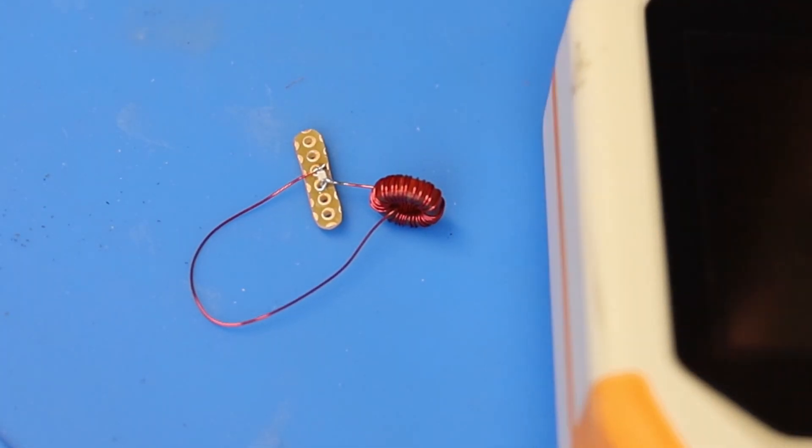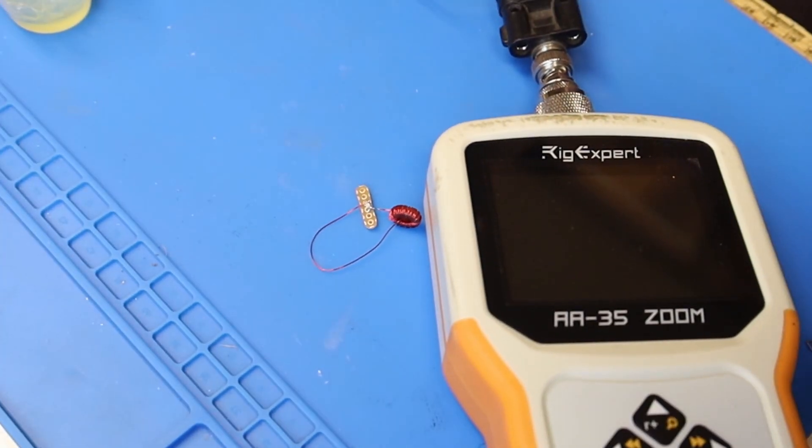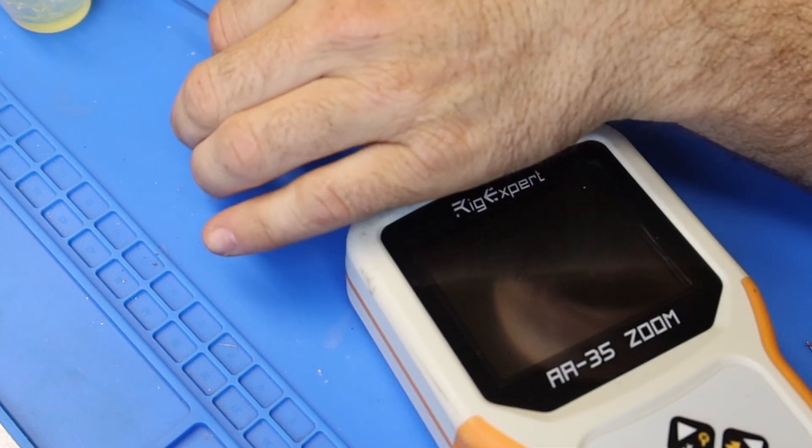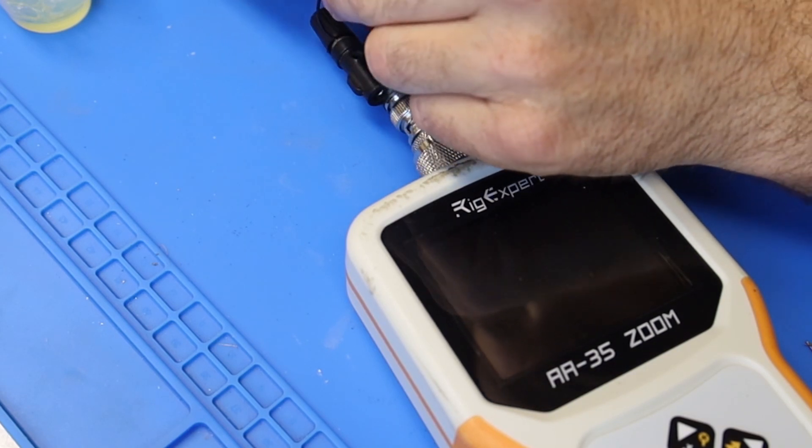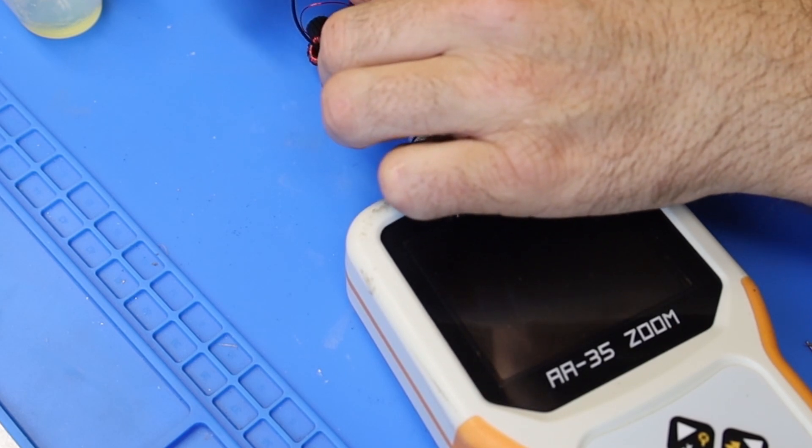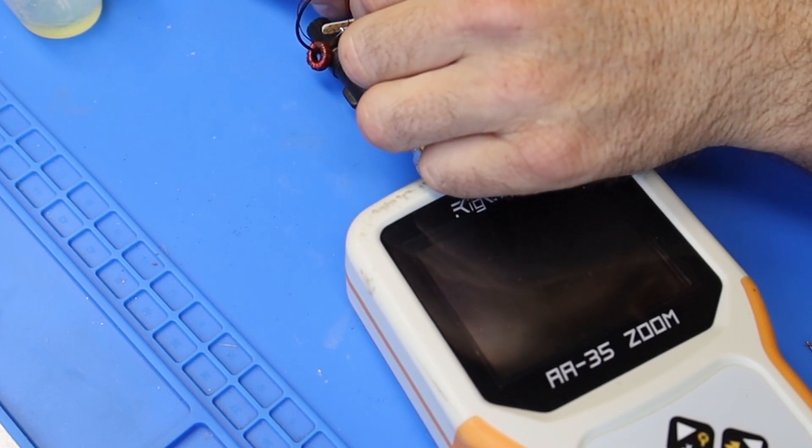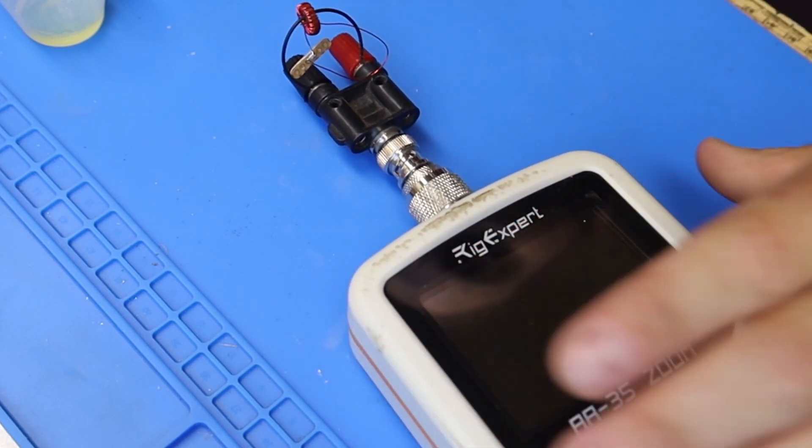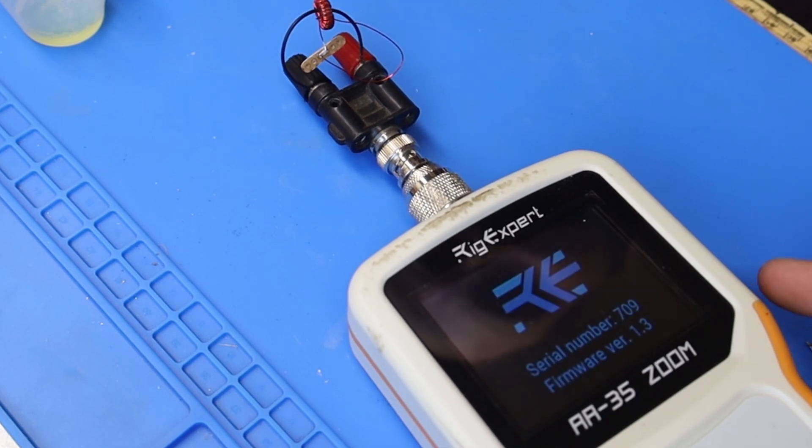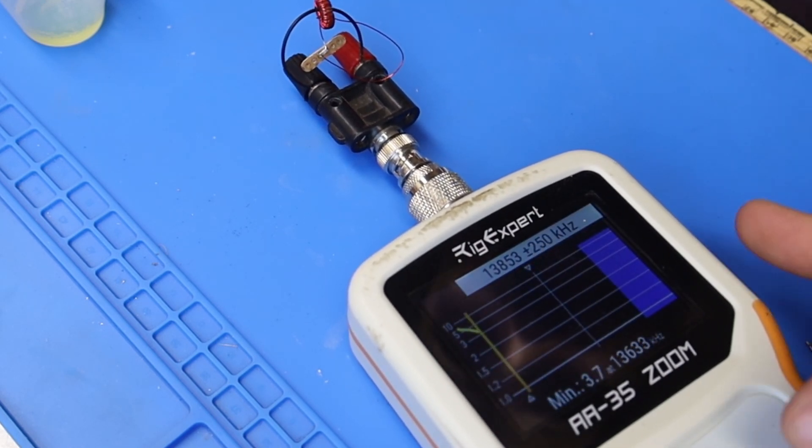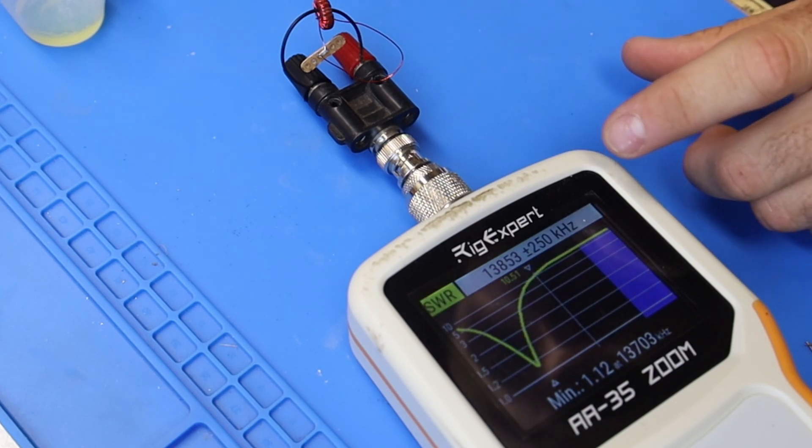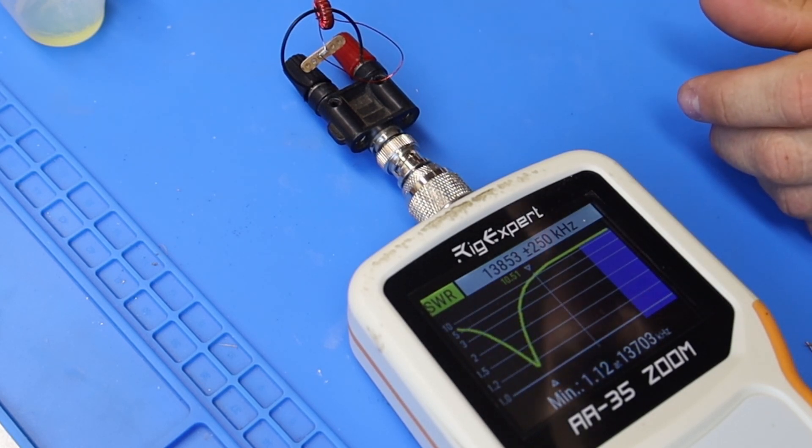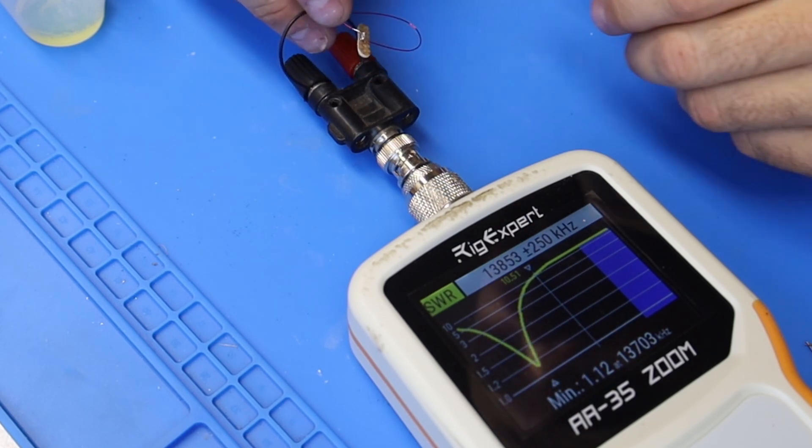So for tuning, we're going to use a Rig Expert AA35 zoom, BNC to binding post connector, and a short piece of wire. This piece of wire can be three to five inches long. And you're going to feed that wire through the center of the toroid, just like that. Turn on our analyzer and run an SWR plot. So we can immediately see that our resonance is at 13.7 megahertz, which is a bit low. We're probably going to need to remove a turn from this toroid.